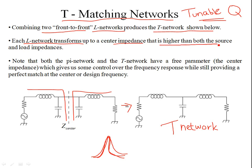That center impedance is higher than both the source and load impedances. You have a source resistance and an unequal load resistance not equal to Rs, and you're interested in transferring maximum power to the load. You can use an L network, a pi network, or a T network.